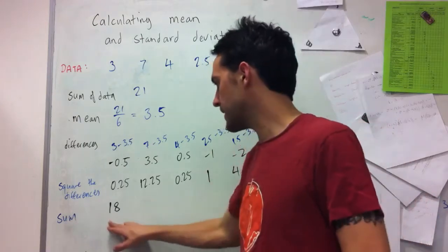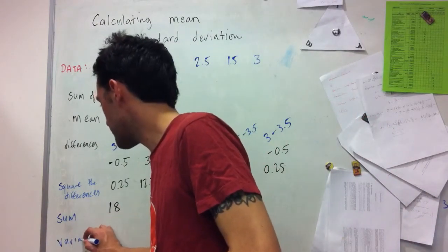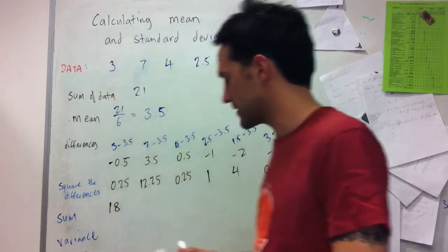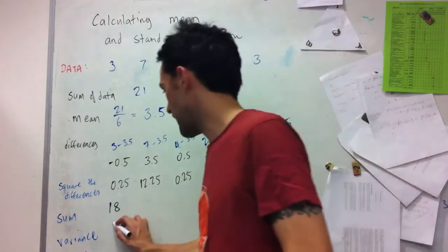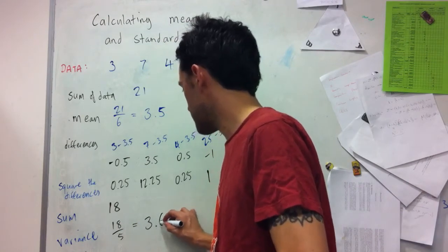So what I get here is this value is called the variance. And it's calculated as 18 divided by 5 in this case, which gives me 3.6.